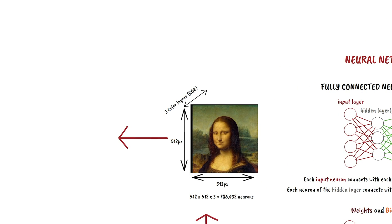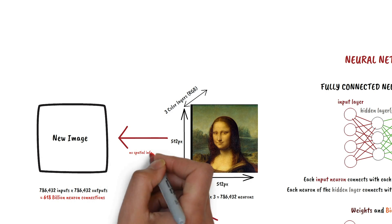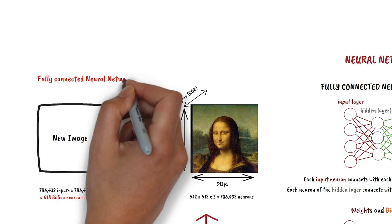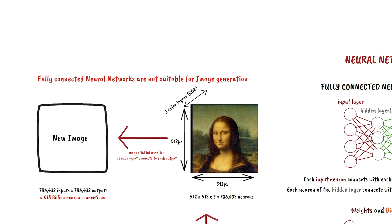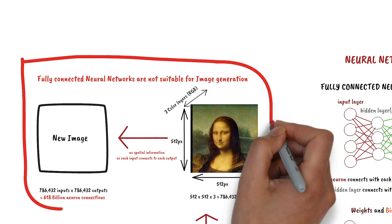So using the network for creating a new image would require more than 600 billion neural connections, and there isn't even any spatial information, as each input connects to each output. So fully connected neural networks aren't suitable for image generation, and we need something different.